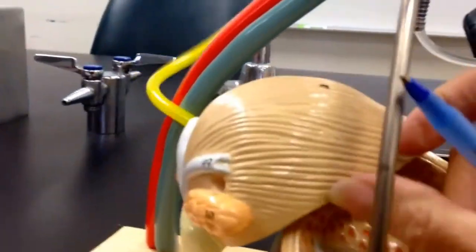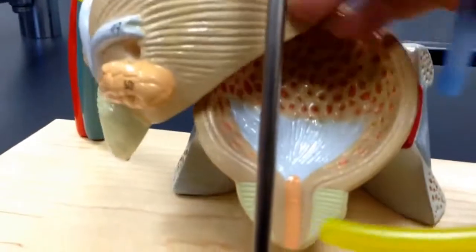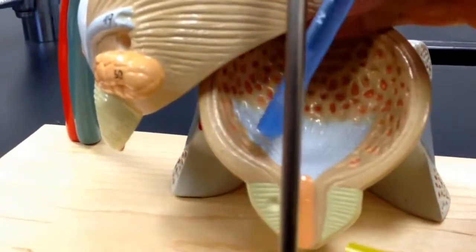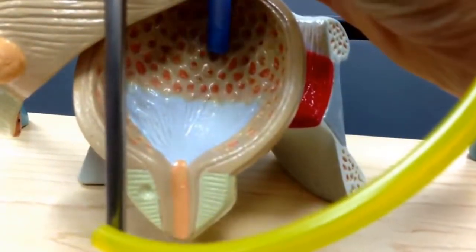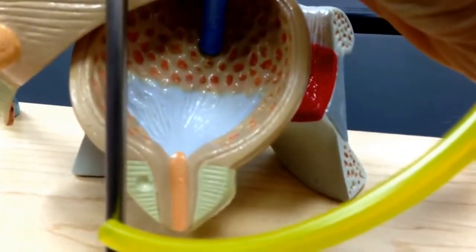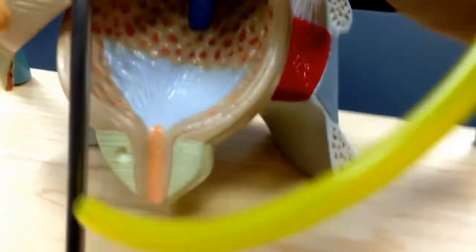If we open up the bladder we will see a triangular area. This triangle is known as the trigon. We'll also notice the inside has rugae very much like the stomach so that it can distend and contract.